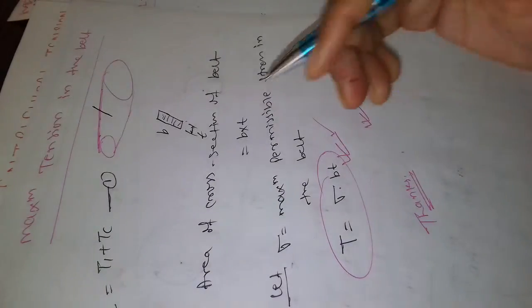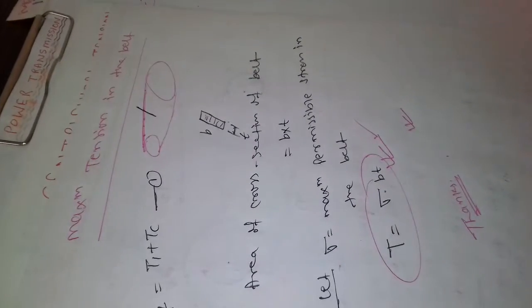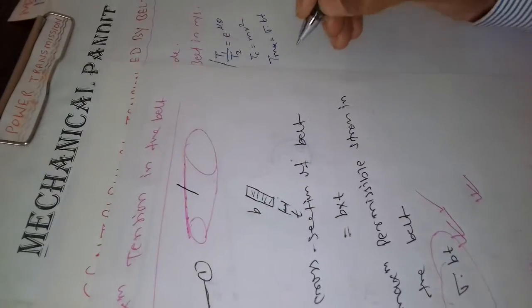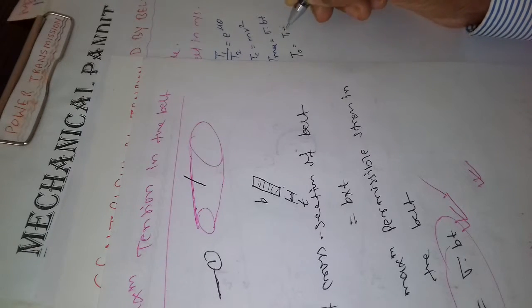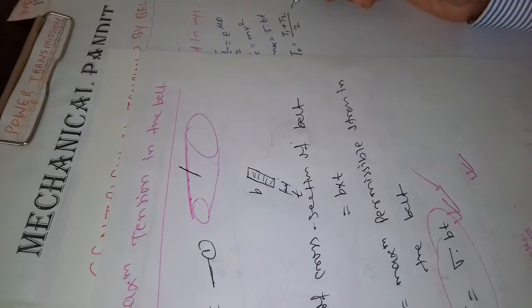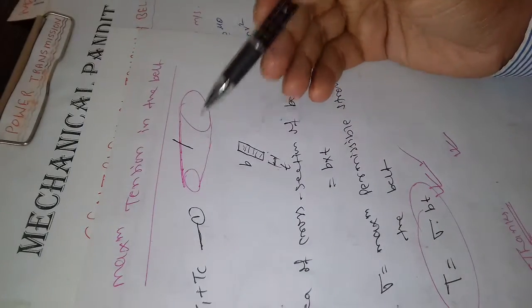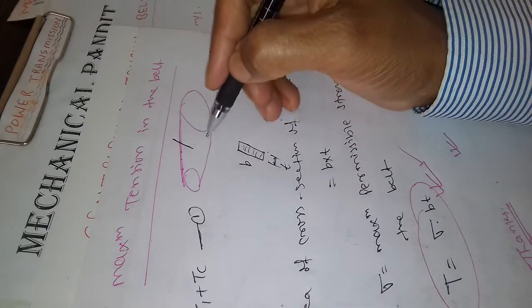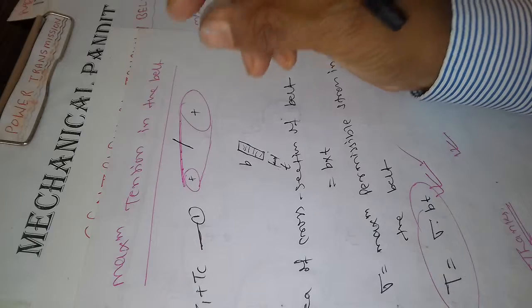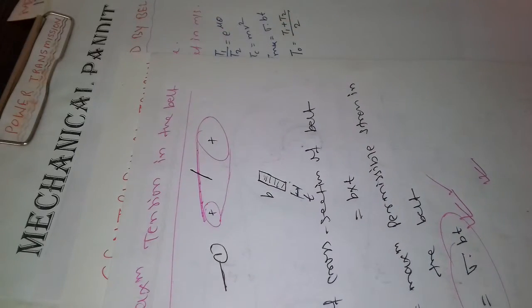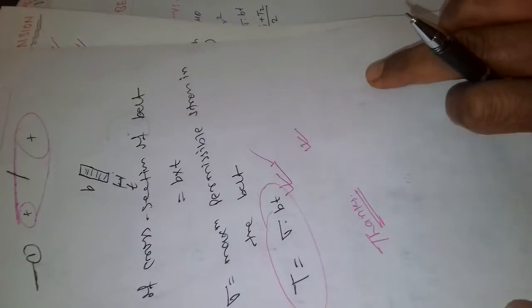Here sigma is the maximum permissible stress in the belt. There is also the concept of initial tension — it is not a very big concept. The initial tension is generally the average of the two tensions, because even in a static condition, when the pulley is not rotating, the belt has a bit of tension.